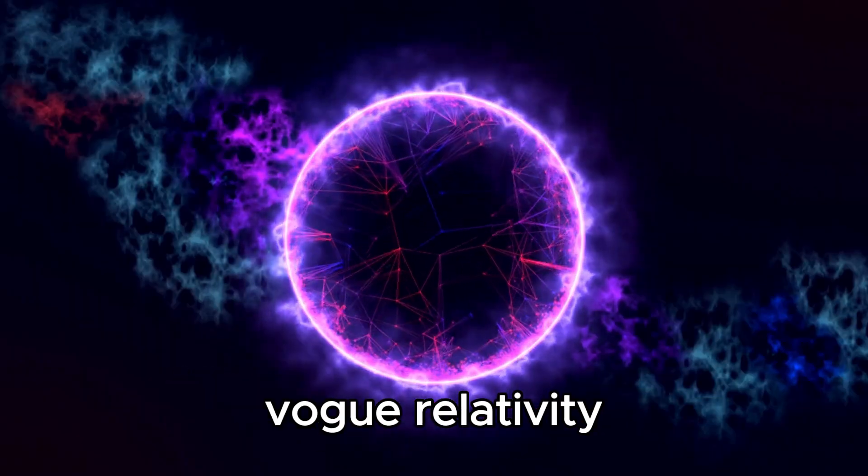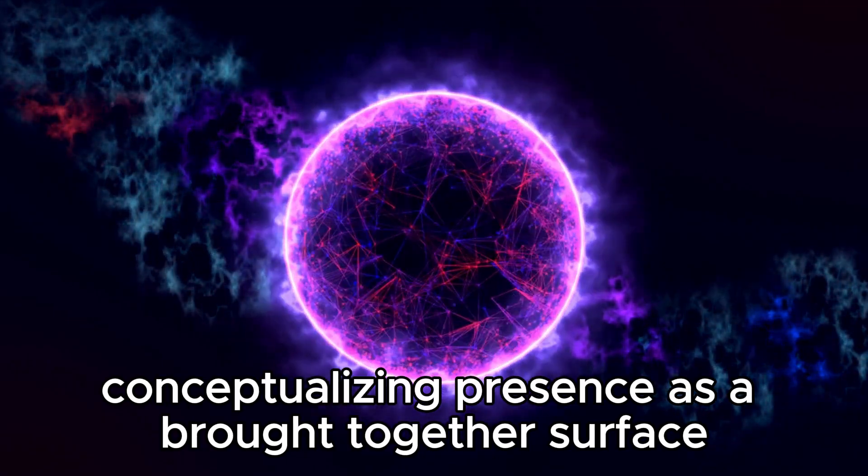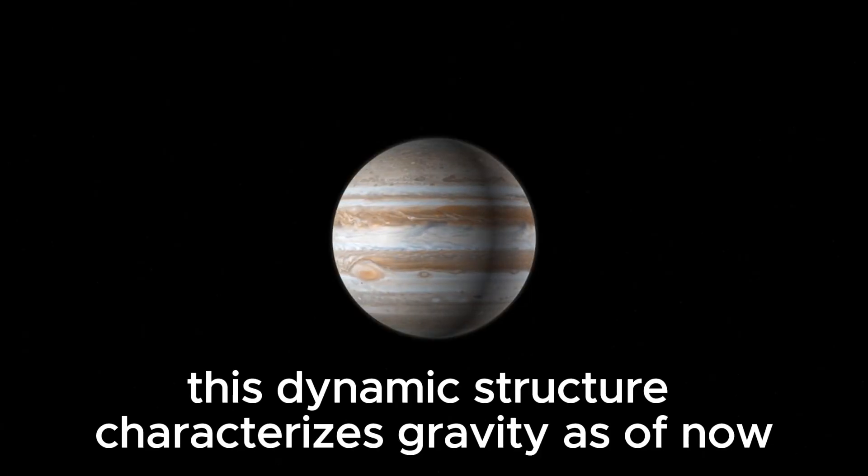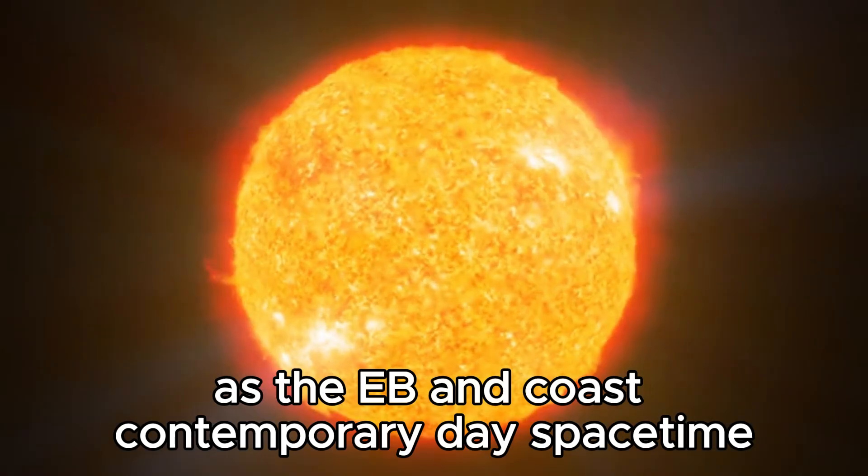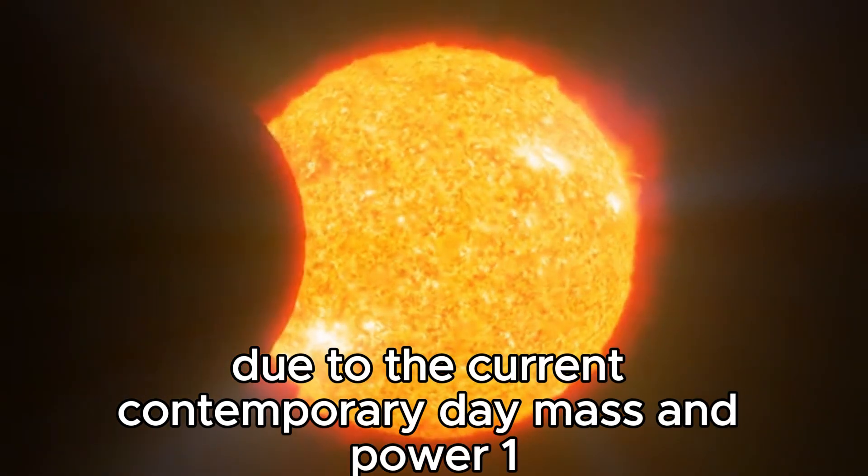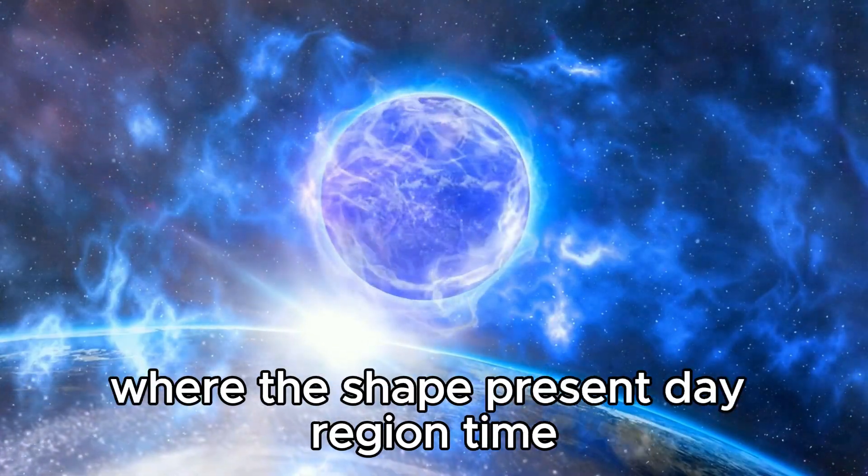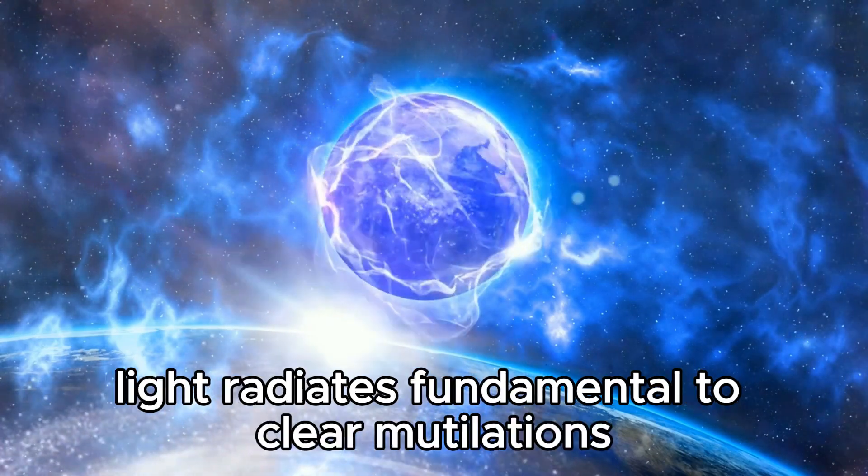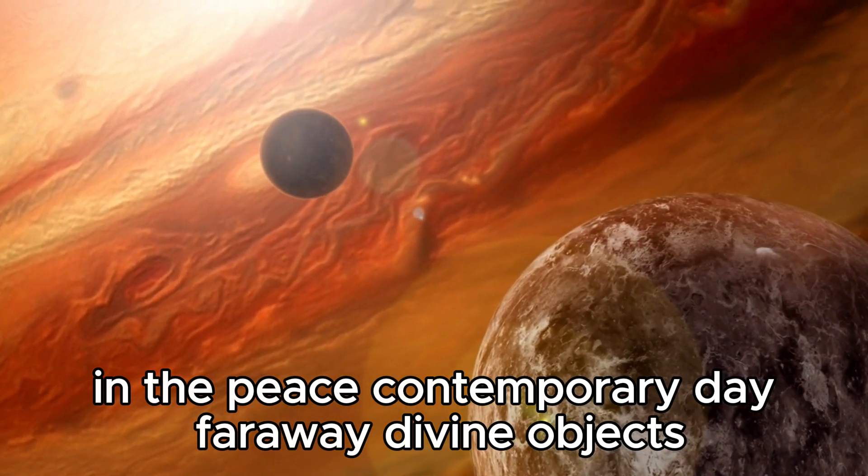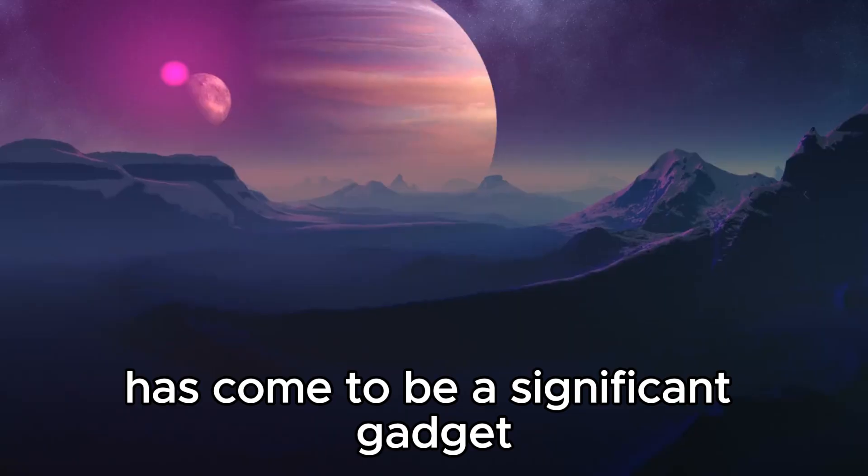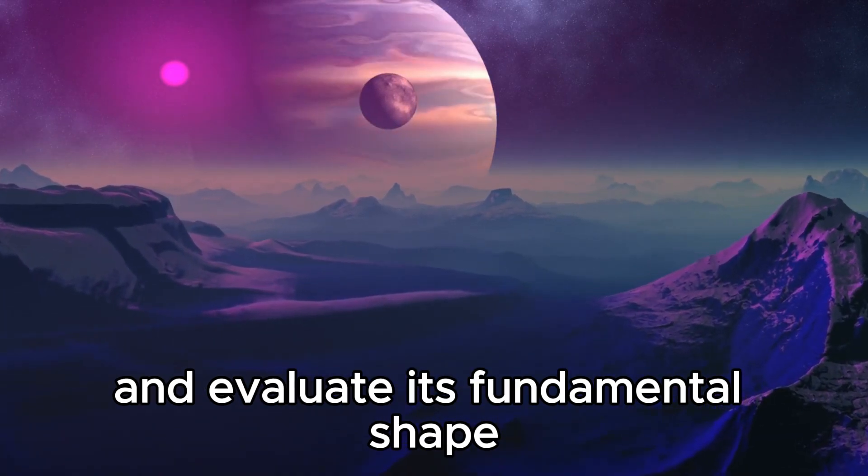Albert Einstein's theory of general relativity changed our understanding of gravity by conceptualizing space and time as a unified surface, which he named spacetime. This dynamic structure defines gravity not as a force acting at a distance but as the curvature of spacetime due to the presence of mass and energy. One of the basic implications of general relativity is gravitational lensing, where the shape of spacetime bends the path of light rays, leading to clear distortions in the appearance of distant celestial objects.